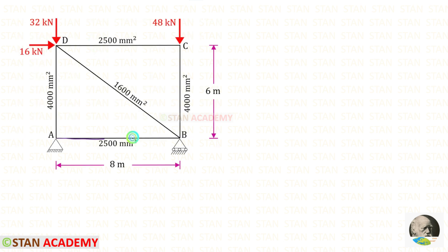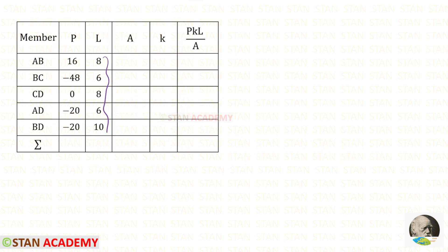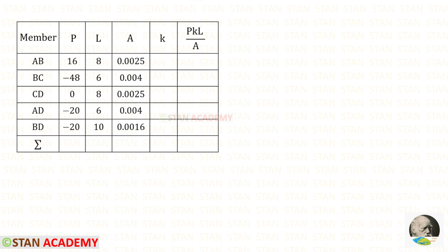Let us enter all of the values of P, then we have to enter all of the lengths of the members. The length of AD and CD is 8 m; the length of AB and BC is 6 m. To find the length of BD we use the Pythagorean theorem: root of (8² + 6²), giving 10 m. Let us enter all of the lengths. For the areas, they are given in mm² so we need to convert them to m² by dividing every area by 1000 × 1000 × 1000.